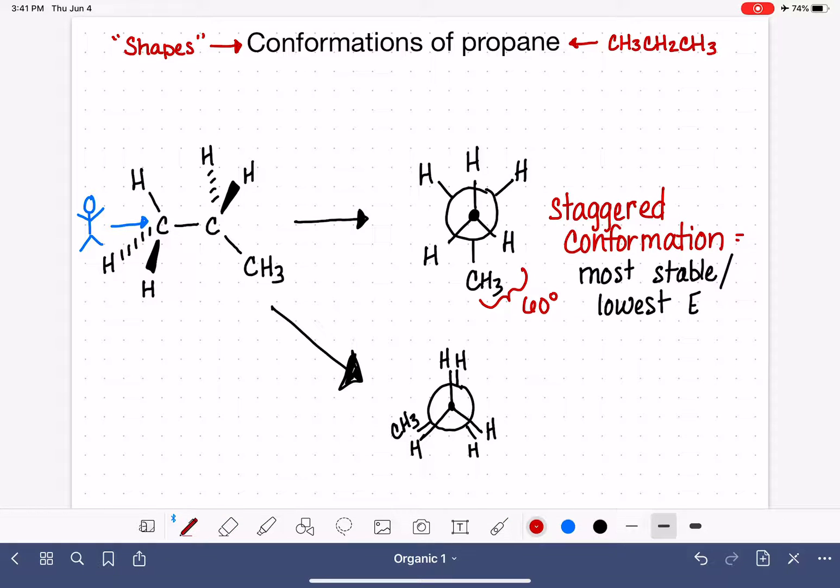So let's talk again about this eclipsed structure. We talked about how in the eclipsed structure, the dihedral angle is zero degrees, even though we don't draw it zero degrees, because we can't draw a zero degree angle. This is the eclipsed conformation. This is the least stable and the highest energy conformation for any molecule.